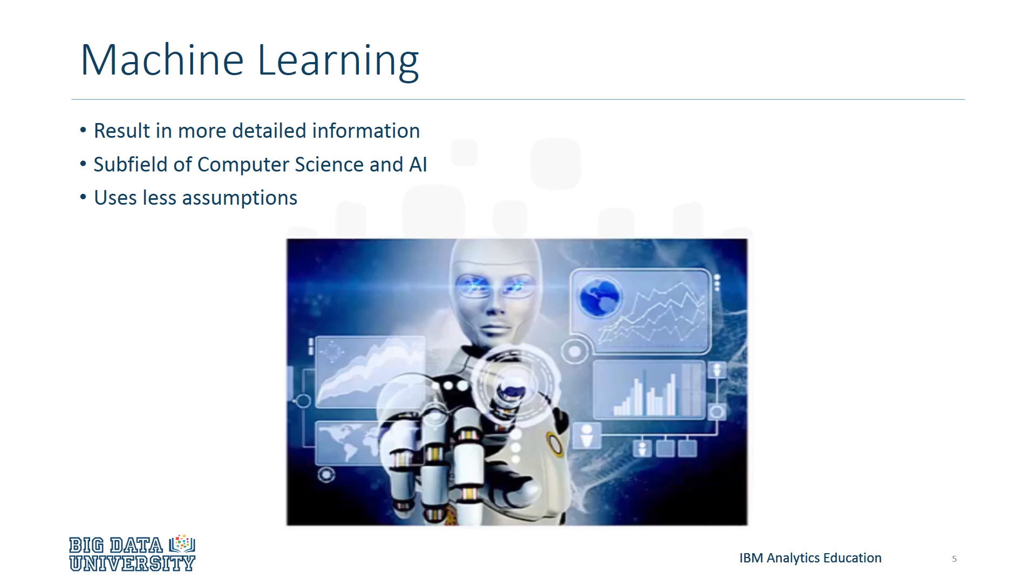Here are some important facts about machine learning. Machine learning is a newer field of study than statistics. For instance, machine learning was invented in 1959, whereas statistics originated in the 17th century.